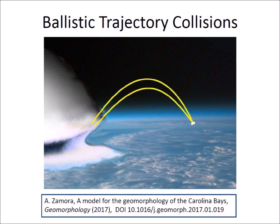The Glacier Ice Impact Hypothesis, published in 2017, proposed that the Carolina Bays were produced by impacts of glacier ice chunks ejected in ballistic trajectories by a meteorite impact on the Laurentide Ice Sheet. Ice chunks were ejected at various angles and speeds. The impacts created inclined conical cavities that were remodeled into shallow elliptical bays by viscous relaxation.